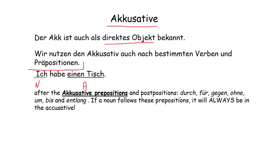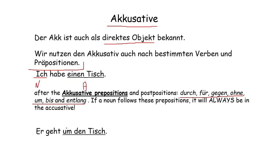These prepositions are called accusative prepositions. If we need to use any object after them, we use only accusative. The accusative prepositions are: durch, für, gegen, ohne, um, bis, and Clark. After these, we always use accusative. For example: 'Er geht um den Tisch' — he goes around the table. Here 'um den Tisch' is accusative because 'um' is an accusative preposition.